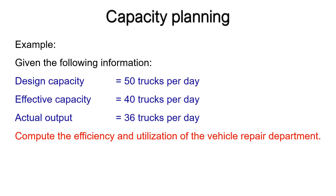Example: Given the following information — design capacity equals 50 trucks per day, effective capacity equals 40 trucks per day, actual output equals 36 trucks per day — compute the efficiency and utilization of the vehicle repair department.